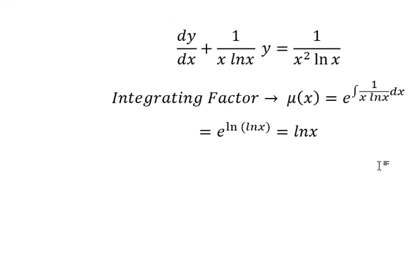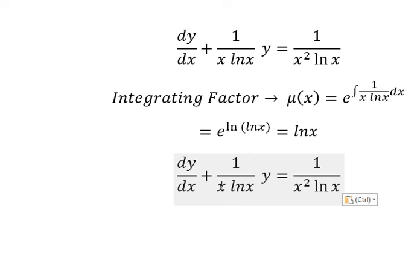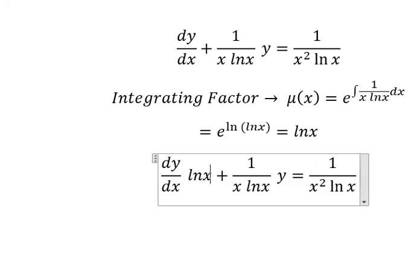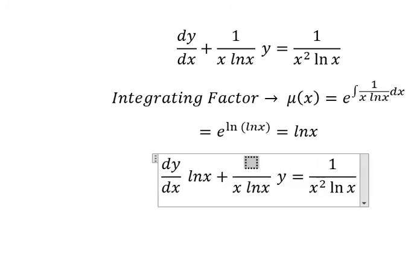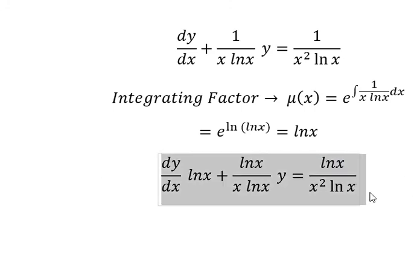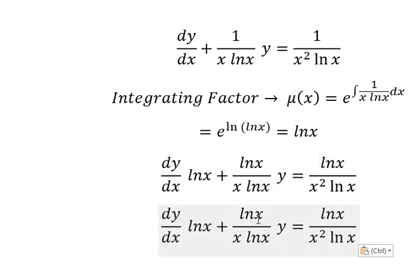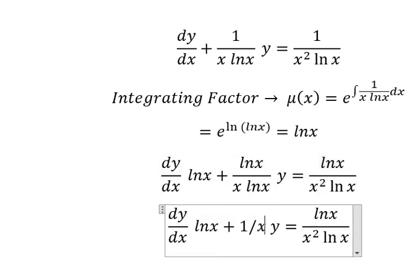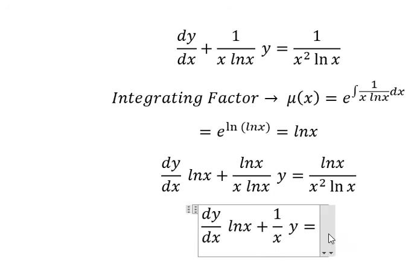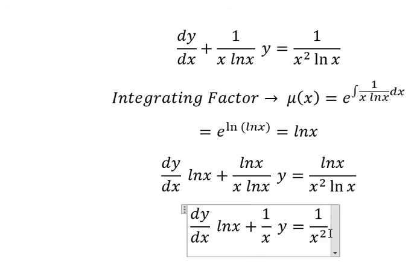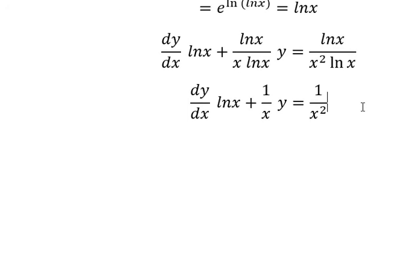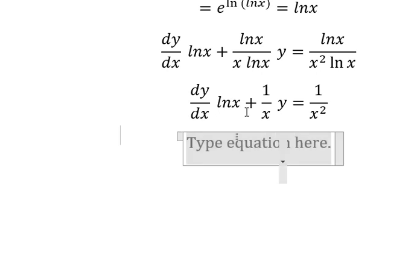That means we multiply both sides by ln of ln x. So we have 1 over x. Later we put the integration for both sides.